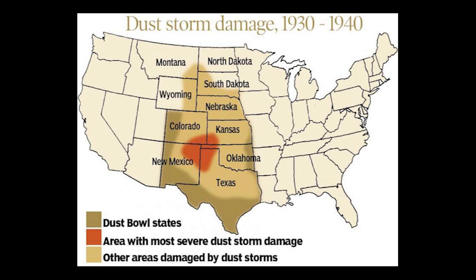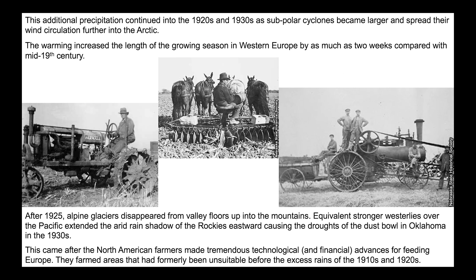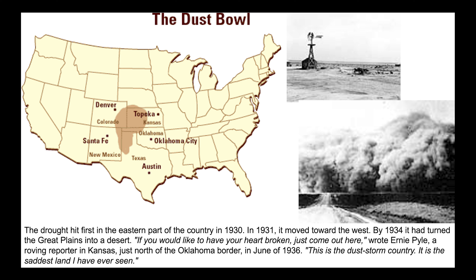This came just after American farmers had made great technological advances and taken out big loans. Europe needed food, they had brand new farm equipment, and they were farming areas that had formerly been unsuitable before the rains of the 1910s and 1920s. The 1910s and 1920s were a period of exceptional rainfall. The drought hit the eastern part of the country in 1930 in Oklahoma, moved west in 1931, and by 1934 turned the great plains into a desert.